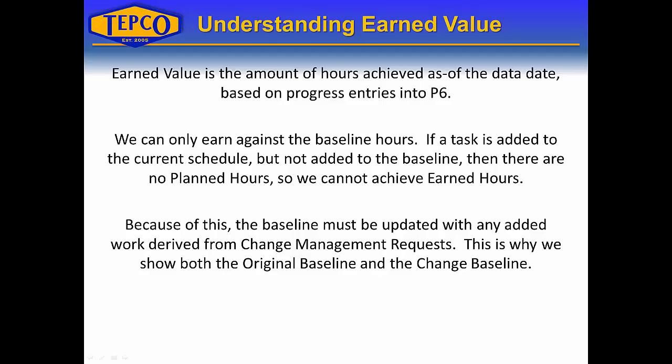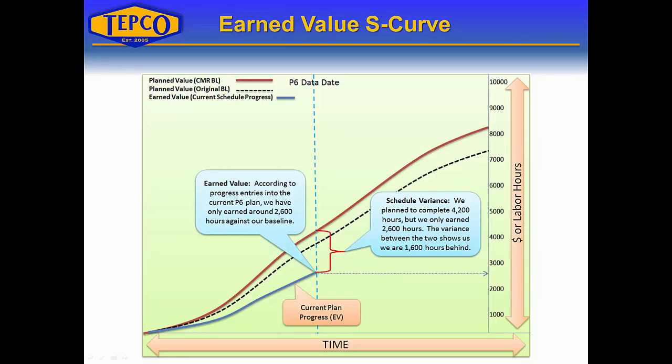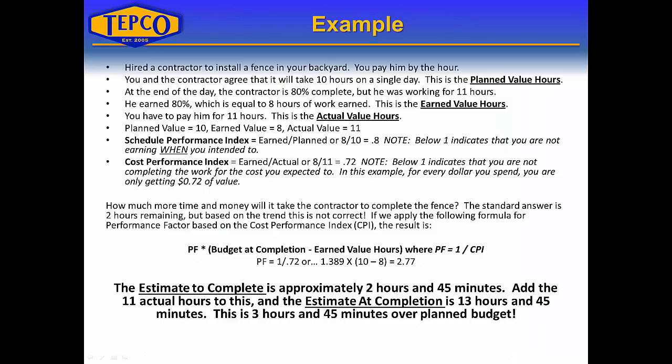Here's the same S-curve example with the earned value line added. You can see there's schedule variance between the planned value from the CMR baseline and the earned value to date. The graph indicates that the schedule is not earning hours at the rate that was planned.